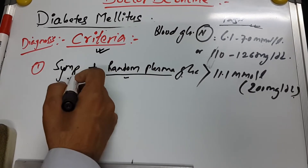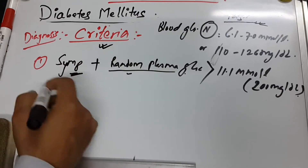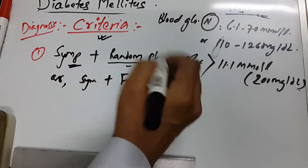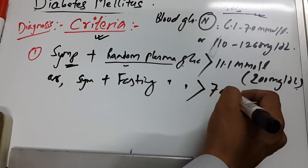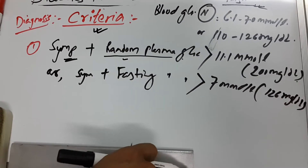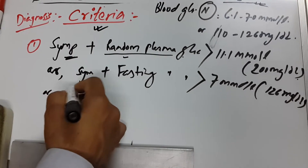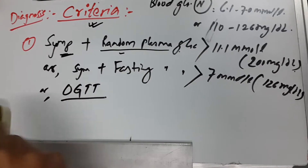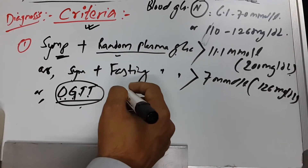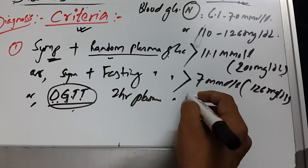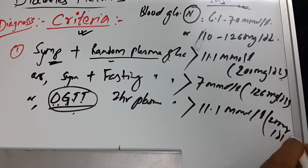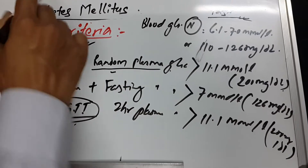The second criterion is symptoms plus a fasting plasma glucose level of more than 7 mmol/L, or more than 126 mg/dL. The third criterion is the OGTT — oral glucose tolerance test. If the two-hour plasma glucose on the OGTT is more than 11.1 mmol/L, or 200 mg/dL, this also meets the criteria for diabetes mellitus.